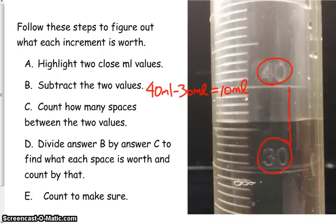Step C says count how many spaces between the two values. So I'm going to start at the 30 line which is right here. And I have 1, 2, 3, 4, 5 spaces before I get to this long line. And then the next space is 6, 7, 8, 9, and 10 is that last one there.